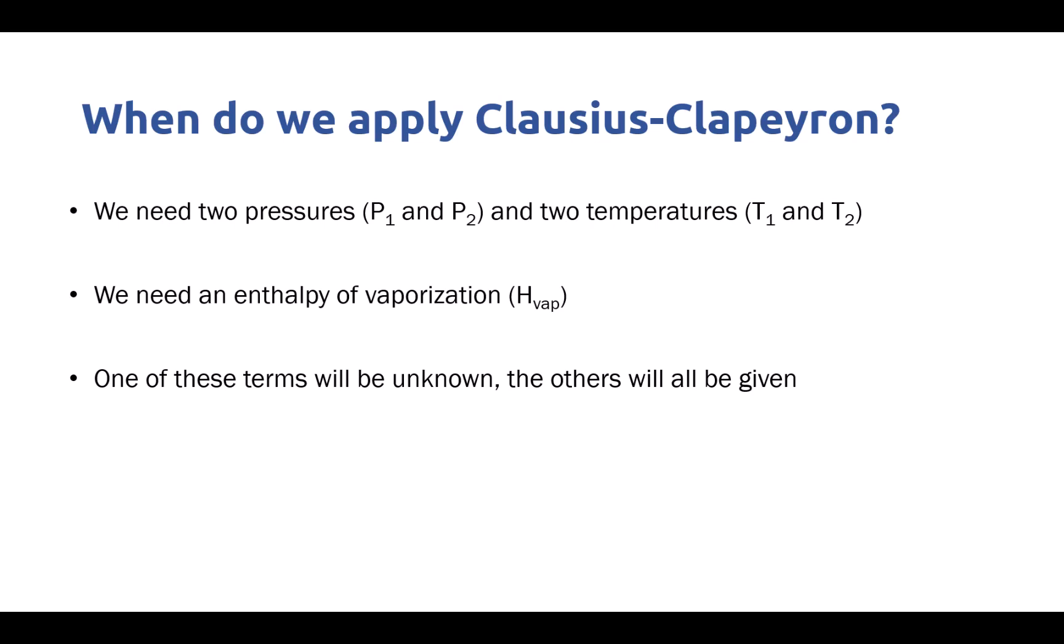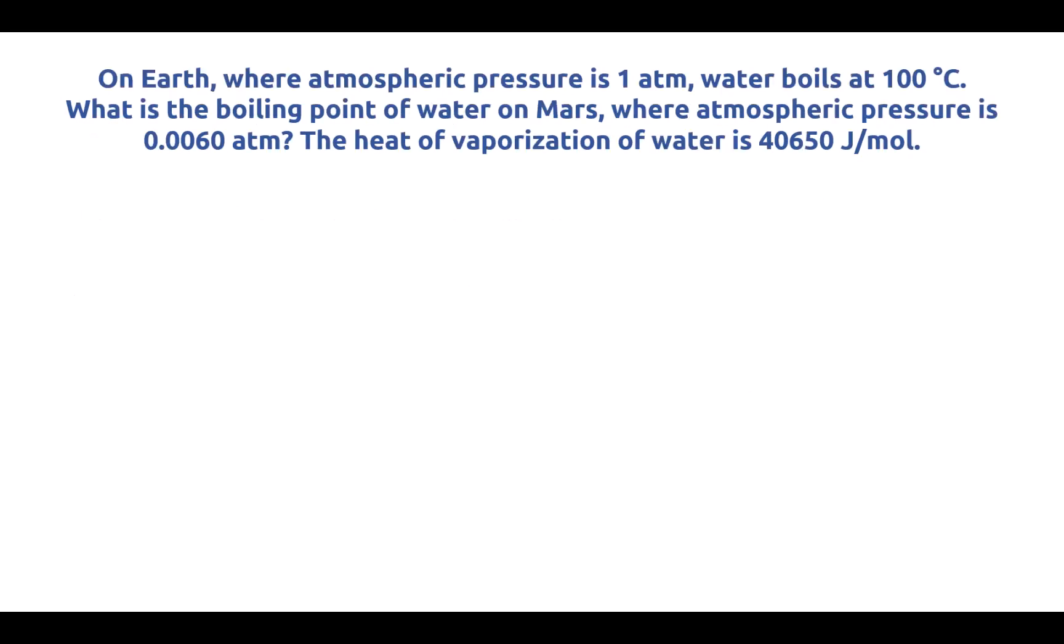Let's look at an example. On Earth, where atmospheric pressure is 1 atm, water boils at 100 degrees Celsius. What is the boiling point of water on Mars where atmospheric pressure is 0.006 atm? The heat of vaporization of water is 40,650 joules per mole.